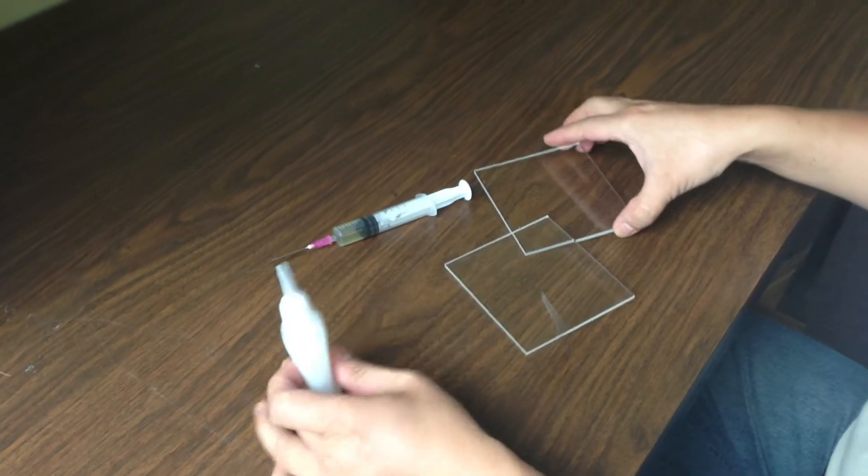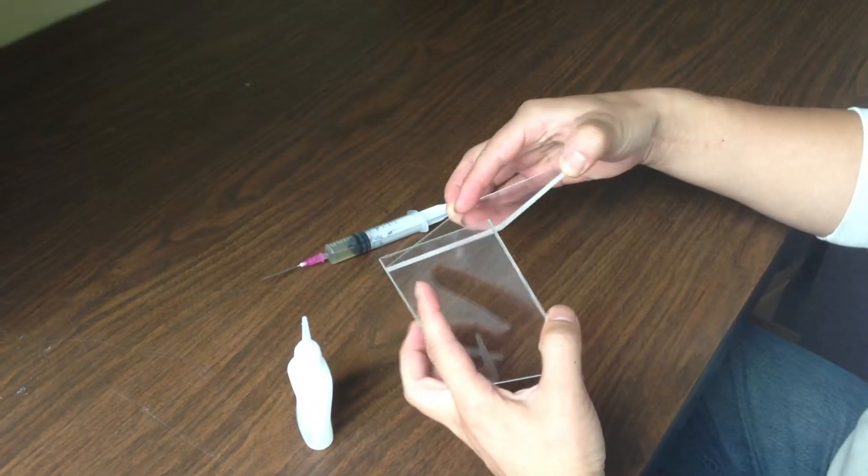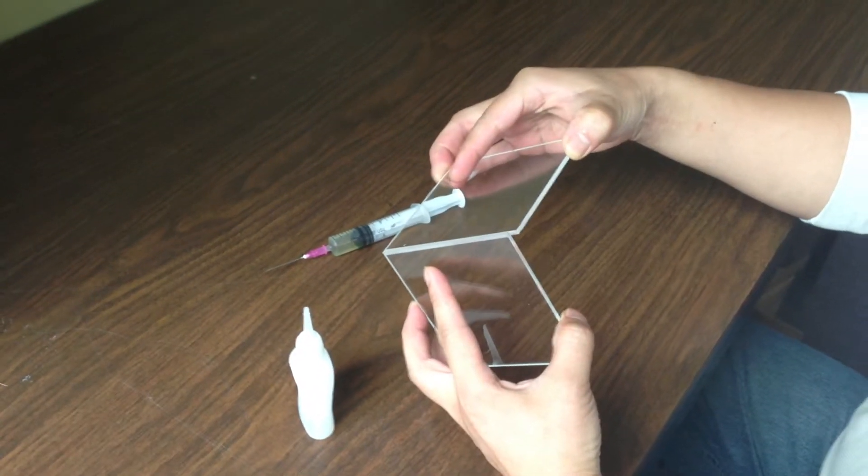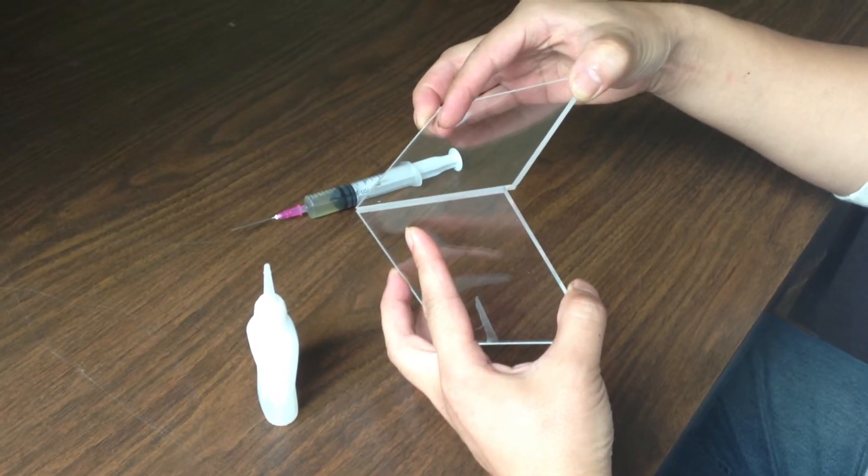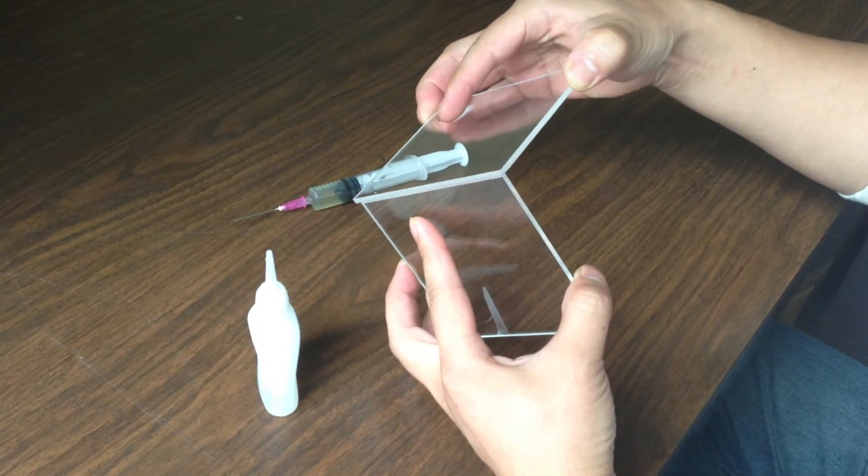In other words, once it gets in between two pieces of acrylic, it actually softens the acrylic, and then eventually, after proper time to cure, it becomes one piece.